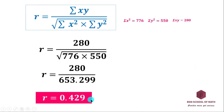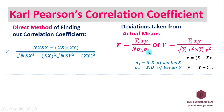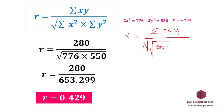The answer is 0.4285. If you have a doubt about this formula, there is a different formula you can use. In that formula, r involves n, sigma x, and sigma x-squared divided by n, which represents the standard deviation of X.